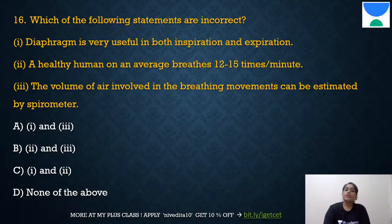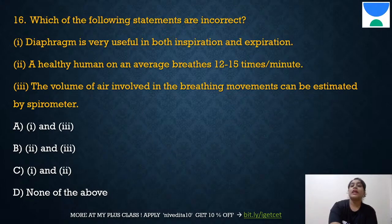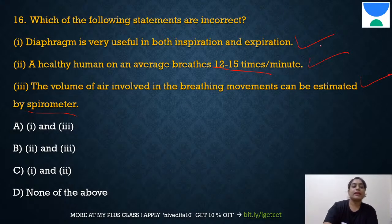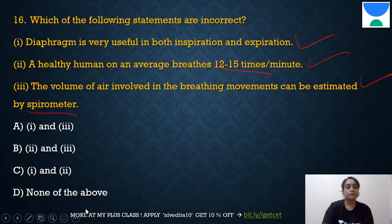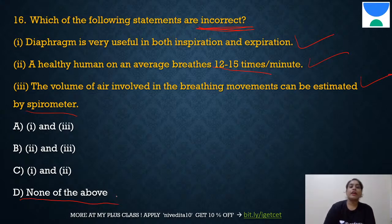Question 16: Which of the following statements is incorrect? The options state that the diaphragm is useful for both inspiration and expiration, that humans breathe 12–15 times per minute, and that volume of air in breathing movements can be estimated by a spirometer. All three statements are correct — so none of the above is incorrect. The answer is: none of the above.